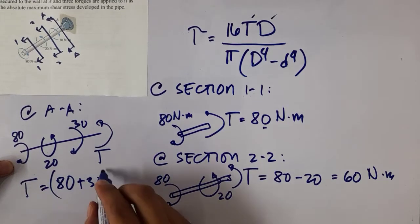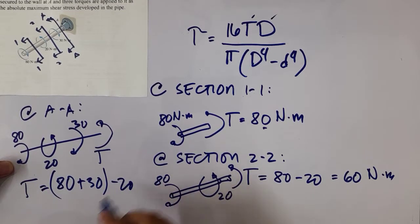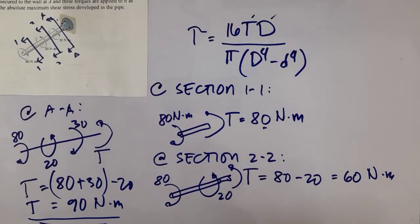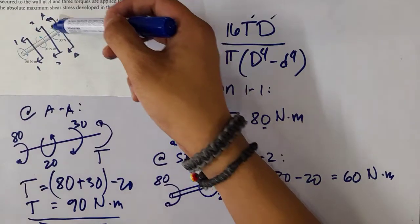You have 80 plus 30 minus 20, so our torque here is 110 minus 20, that's 90 N·m. So the largest torque is developed in section AA.